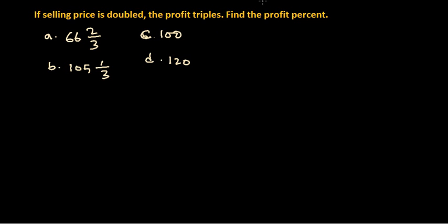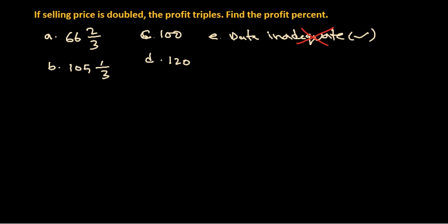In certain cases, people get puzzled and choose the option 'data inadequate.' I've found many students just pick that because they see no values. But this is wrong — you can actually get the answer by doing the math. Always do the math first. Only if you find genuine difficulty should you consider 'data inadequate.' Otherwise, avoid it — it's there to confuse you.